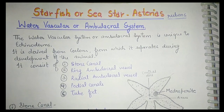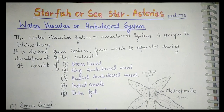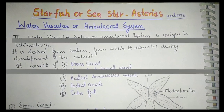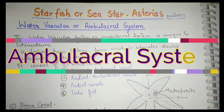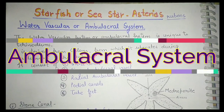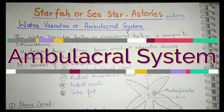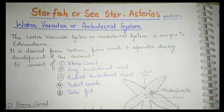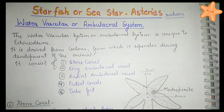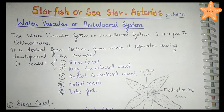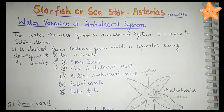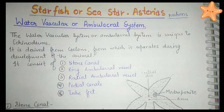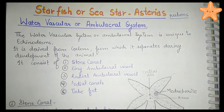Hey friends, in this video we are going to study about the water vascular or ambulacral system, which is a very unique property of echinoderms. In the phylum Echinodermata, we are going to study about this system in Asterias rubens, which is the starfish, also known as sea star.